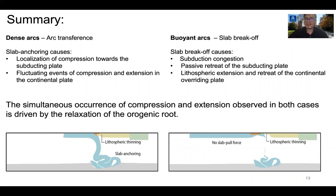In the case of buoyant arcs, slab break-off results in the retreat of both the subducting plate and the continental plate, and this also continues in the last stage. In summary, dense arcs controlled by arc transference and slab anchoring result in the localization of compression towards the subducting plate and fluctuating episodes of compression and extension in the continental plate. Buoyant arcs with slab break-off result in congestion of the subduction zone, passive retreat of the subducting plate, and lithospheric extension and retreat of the continental overriding plate. The simultaneous occurrence of extension and compression in both cases is driven by the relaxation of the orogenic root.